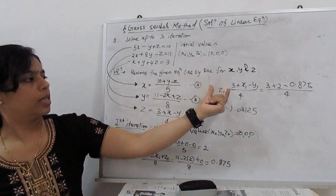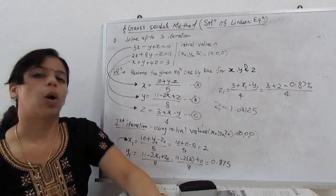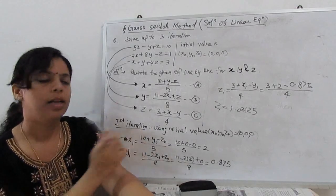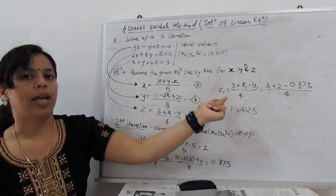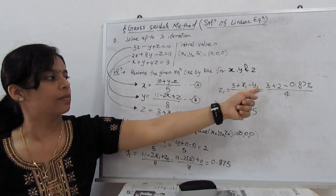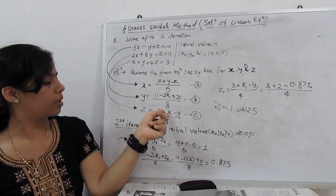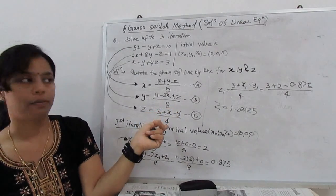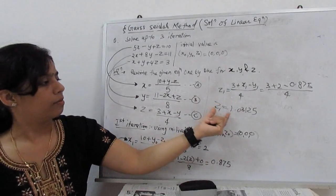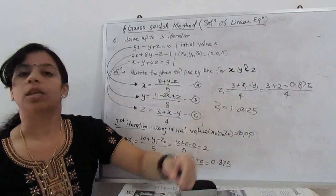Next, we have to find Z1. Before Z1, we already calculated X1 and Y1. Here the difference: we have to calculate Z1 with the help of substituting initial value X1 and Y1. Our equation becomes (3 + X1 - Y1)/4. When we solve it, it will give Z1 equal to 1.03125.